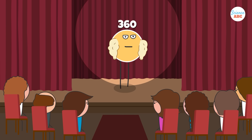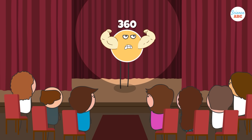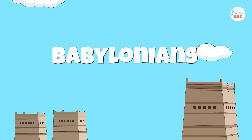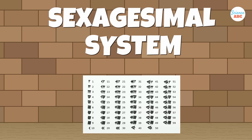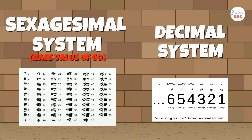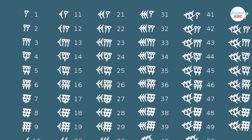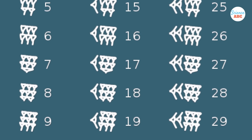Calculations using 360 are quite simple once you become used to them. One theory for why a full circle is 360 degrees comes from the Babylonians. The Sumerians and Babylonians used the sexagesimal numeral system, a system with a base value of 60, while the current system we use is known as the decimal system and has a base value of 10. Once we reach the 10th number, we start repeating the symbols from 0 to 9 to form new numbers. The Babylonians had 60 different symbols with which they formed numbers.